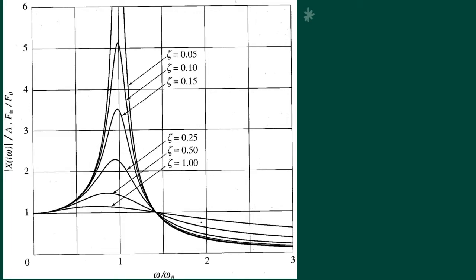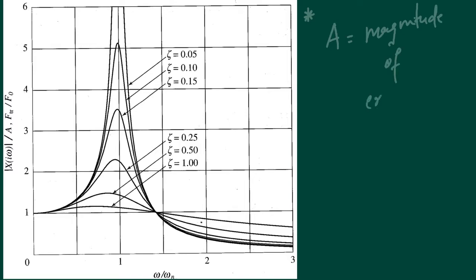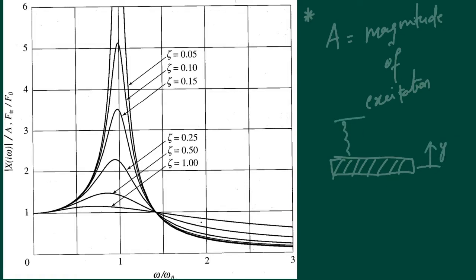One thing to note is that we have non-dimensionalized the modulus of x(iω) by dividing it by A. Here, A is the magnitude of the excitation — it is the amplitude with which our base is vibrating.